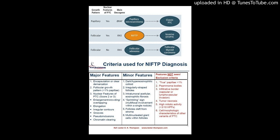Results: the number of cases classified as NIFTP compared with FVPTC was highly variable — Institution A: 14%, Institution B: 39%, Institution C: 12%. For 3,250 resected thyroid nodules with a previous FNAC diagnosis, the average decrease in ROM after exclusion of NIFTP for all TBSRTC categories was: Institution A: 9.8%, Institution B: 3.9%, Institution C: 1.3%.